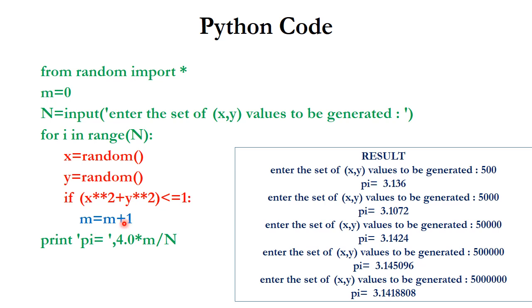When the loop exits, m is the total number of points inside the quarter circle, and pi is calculated as 4*m/N.